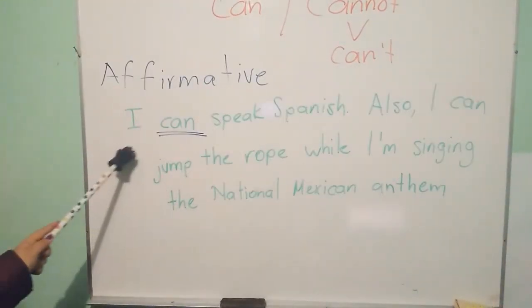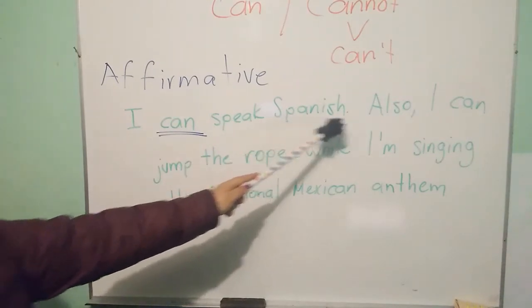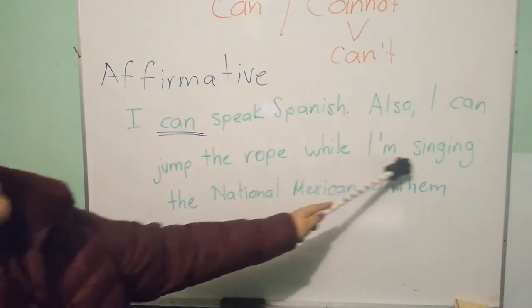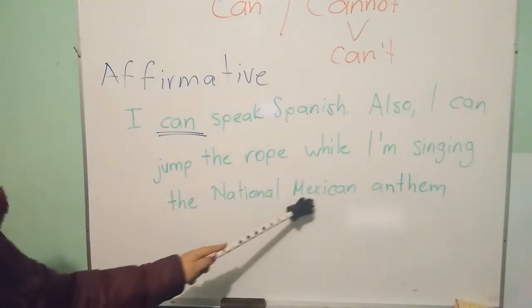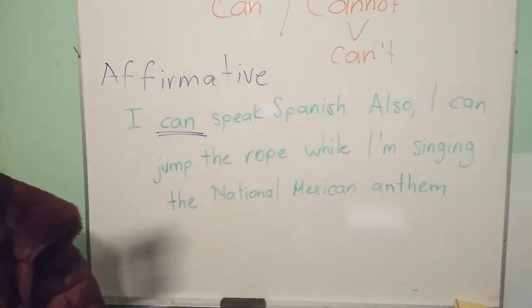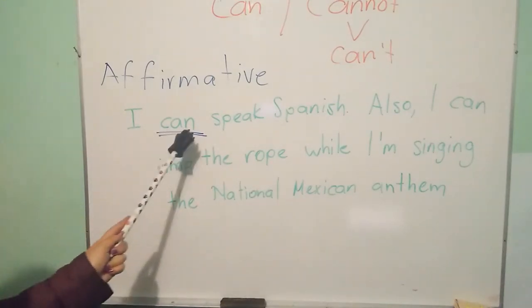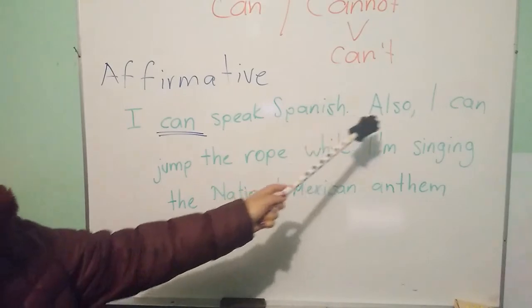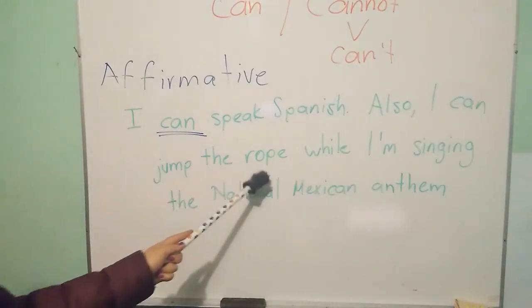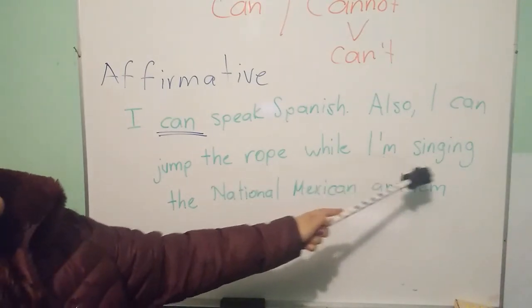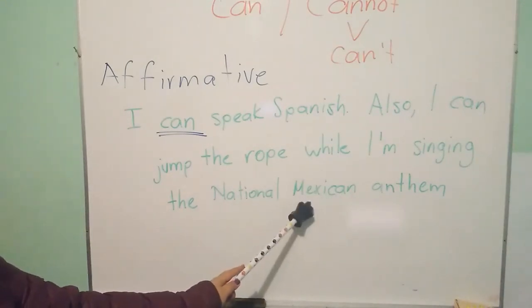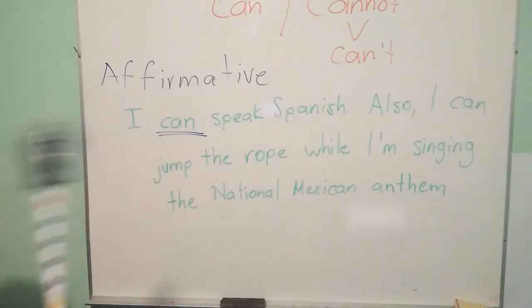For example: 'I can speak Spanish.' Also, 'I can jump the rope while I'm singing the national Mexican anthem.' Entonces, aquí estamos hablando de una habilidad que yo tengo: yo puedo hablar español y también puedo brincar la cuerda mientras estoy cantando el himno nacional mexicano. Esa es una habilidad que tengo.